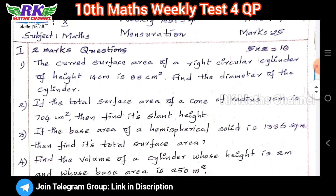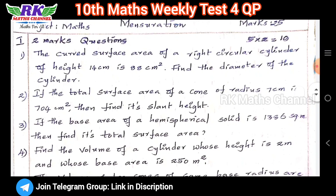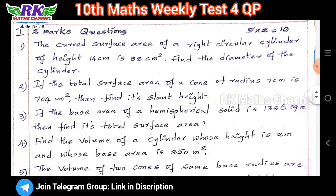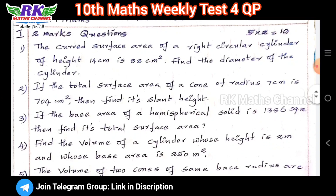We will start. We will have one more question when we finish. First, we have two questions, five questions. Five times two are 10 marks. We will have the first surface area question.